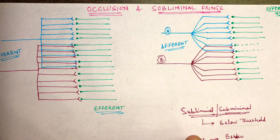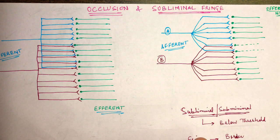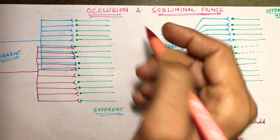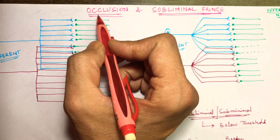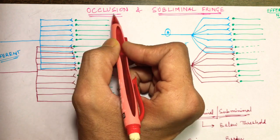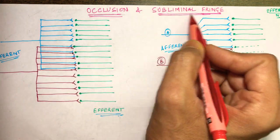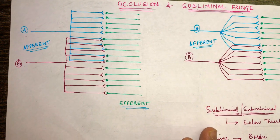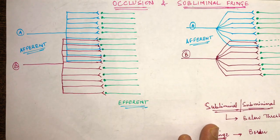Hello everyone. A few days back I uploaded a class regarding properties of synapse, and a few students requested to upload the difference between occlusion and subliminal fringe, as there was slight confusion. So I will try to explain these two properties — occlusion and subliminal fringe — by drawing the diagram.